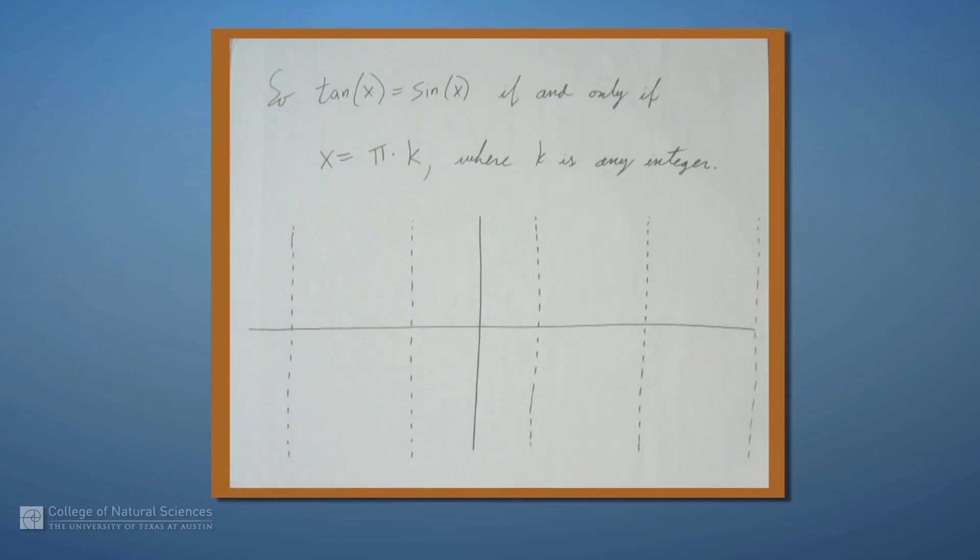Now let's sketch tangent. So tangent looks like this. And I'm not labeling anything, because right now I don't care about the values of these points. What we're really looking at is the relative behavior of sine and tangent.